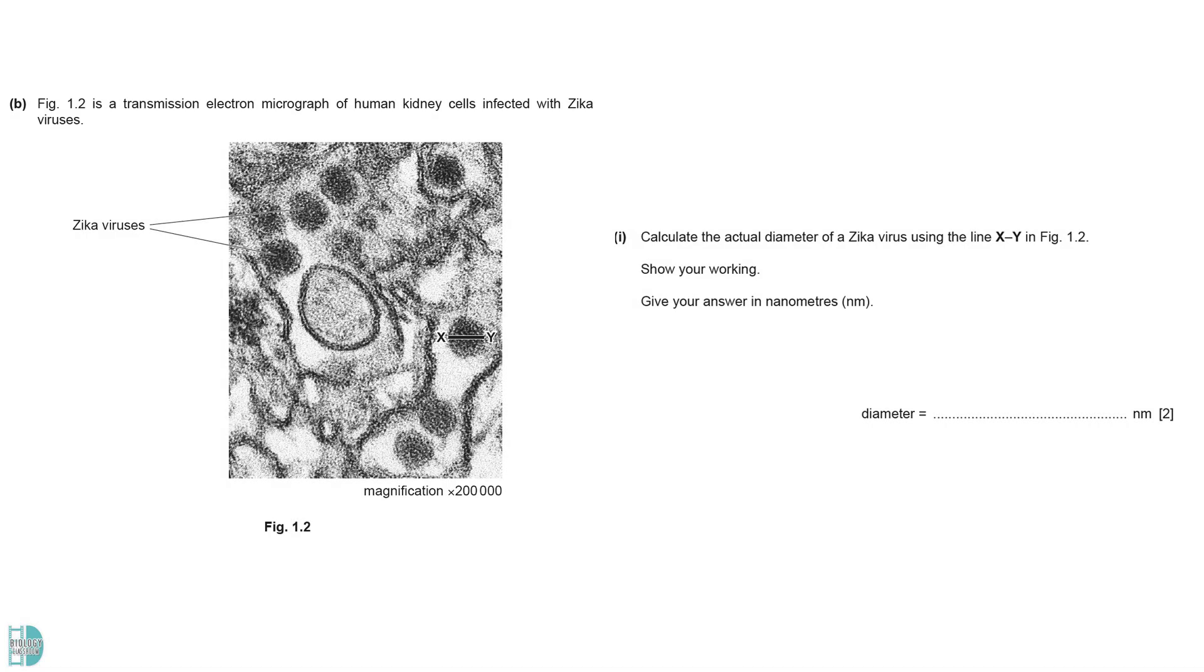B1 wants you to calculate the actual diameter of a Zika virus. Actual diameter equals image diameter divided by magnification. First, measure the image diameter in millimeters.